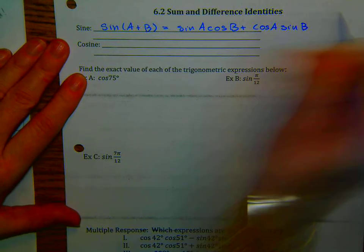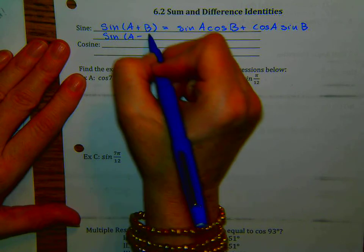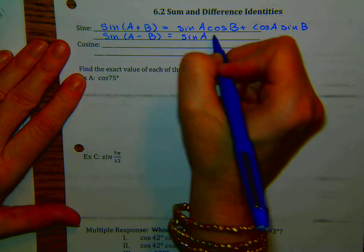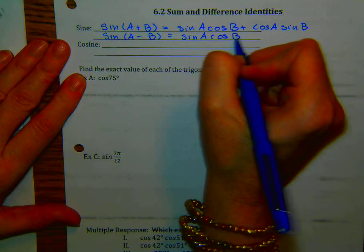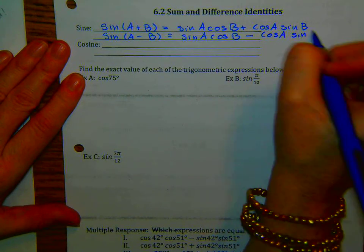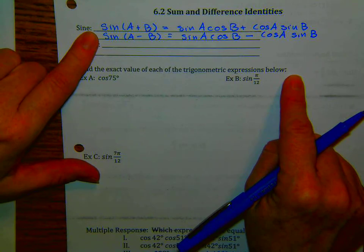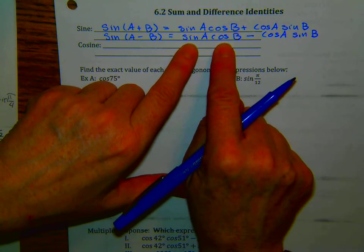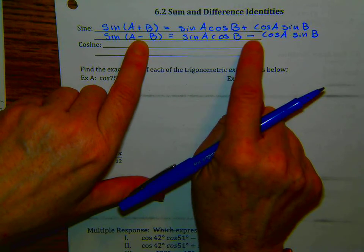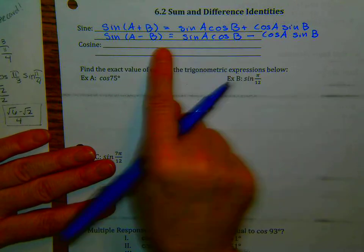The sine of A minus B is equal to the sine of A times the cosine of B minus the cosine of A times the sine of B. Notice that the sine sum and difference identities have the sine and the cosine with the same signs. If it's the sine of A minus B, then it has the minus joining the two. Notice those commonalities.